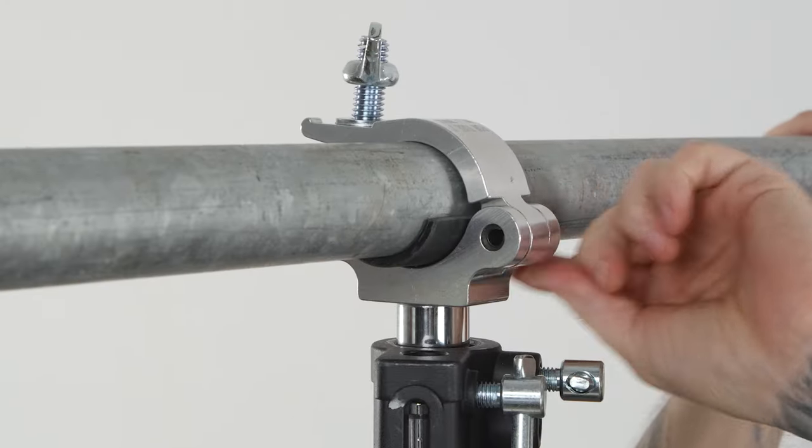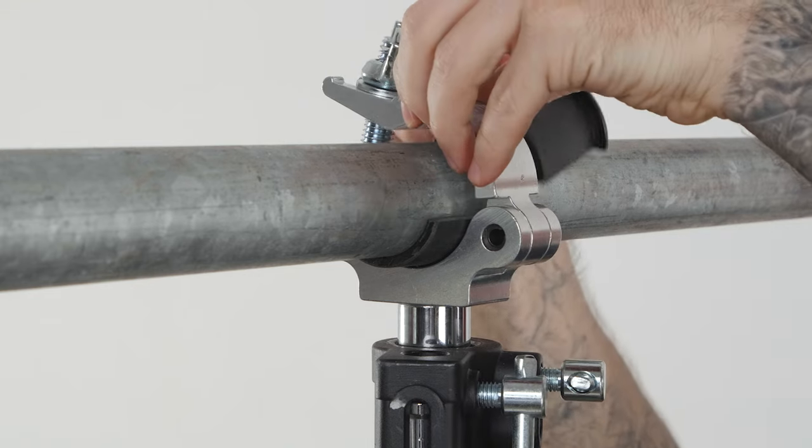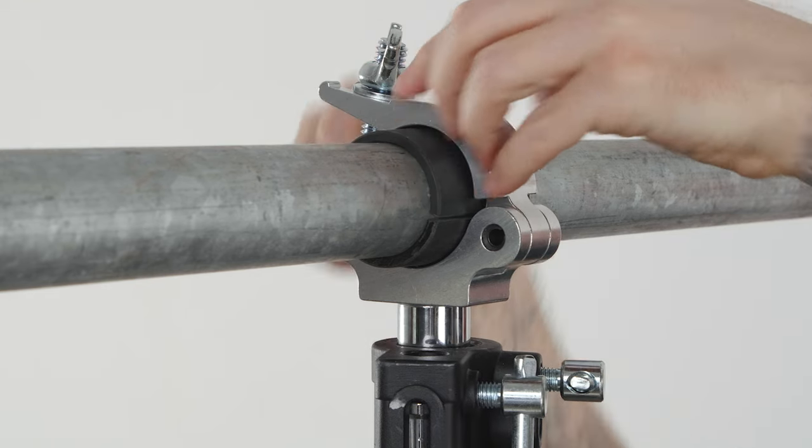Instead of buying a whole new series of couplers to fit the smaller diameter, you can use your existing 2 inch diameter couplers simply by adding these coupler insert adapters, designed specifically for 1.25 inch schedule 40 pipe with an outer diameter of 1.66 inches.